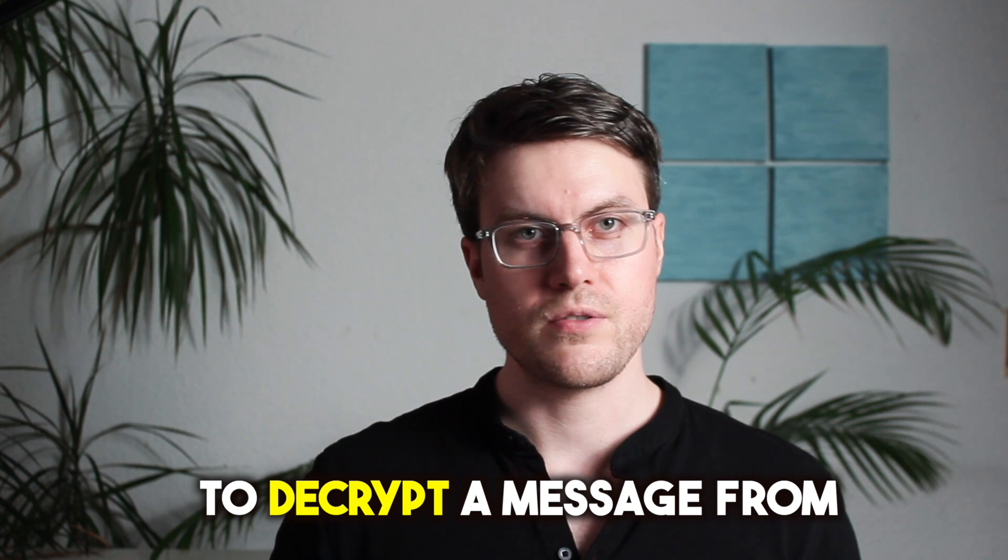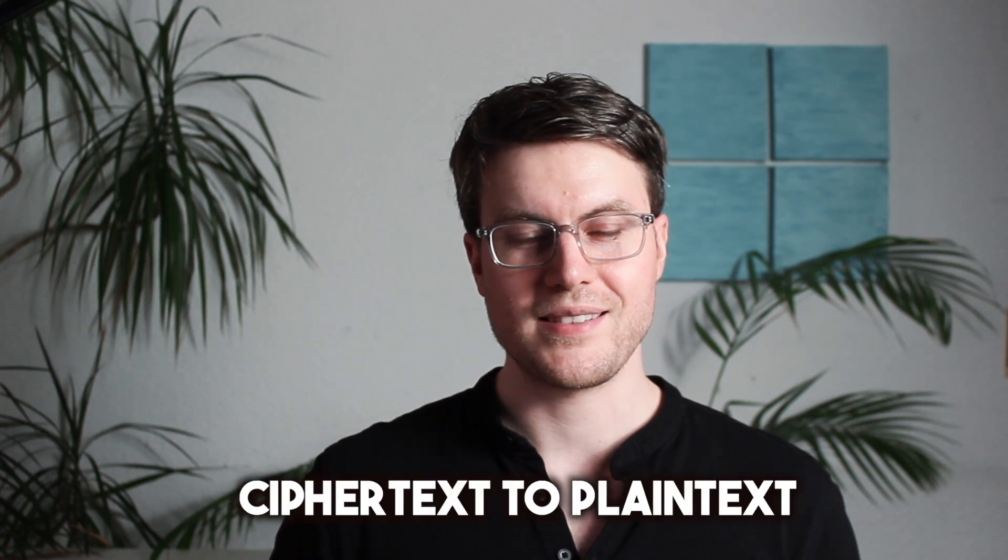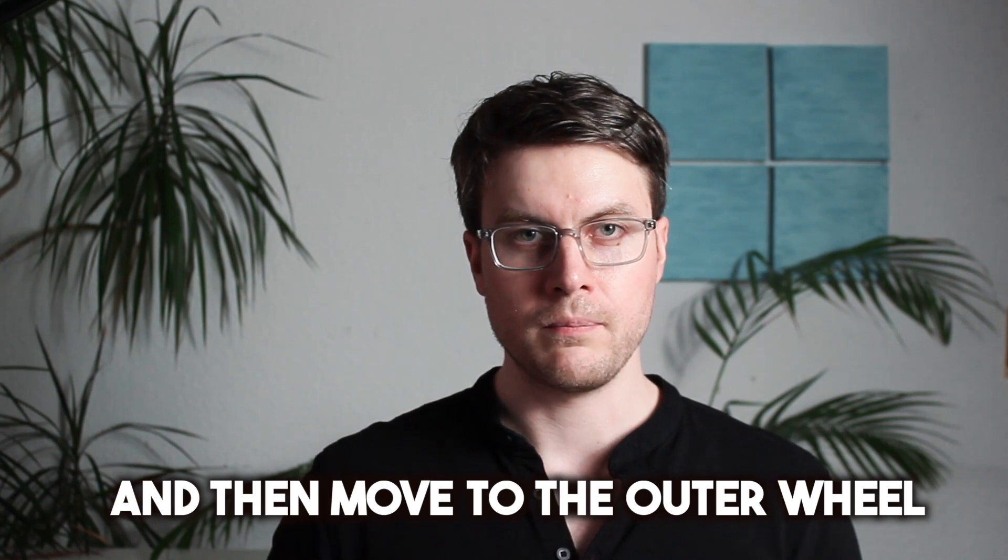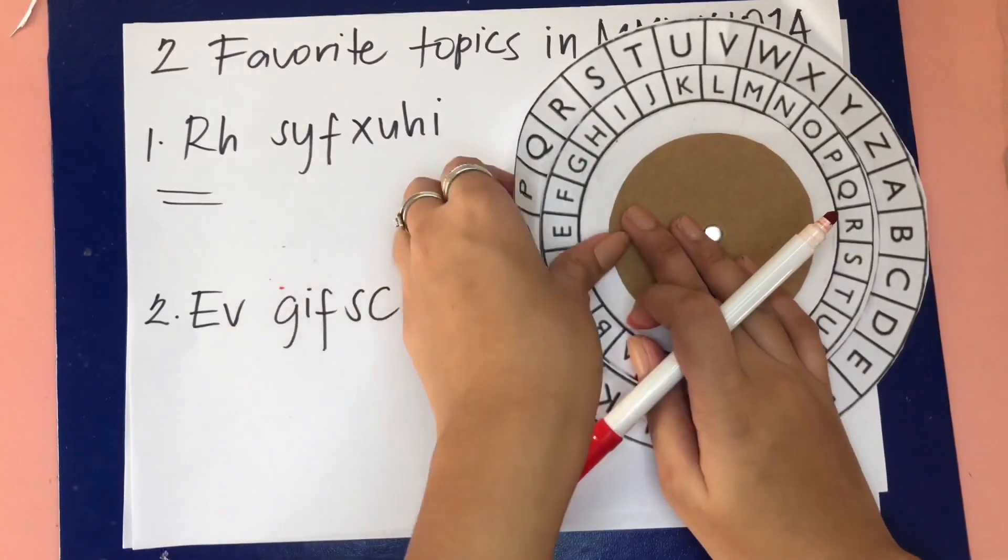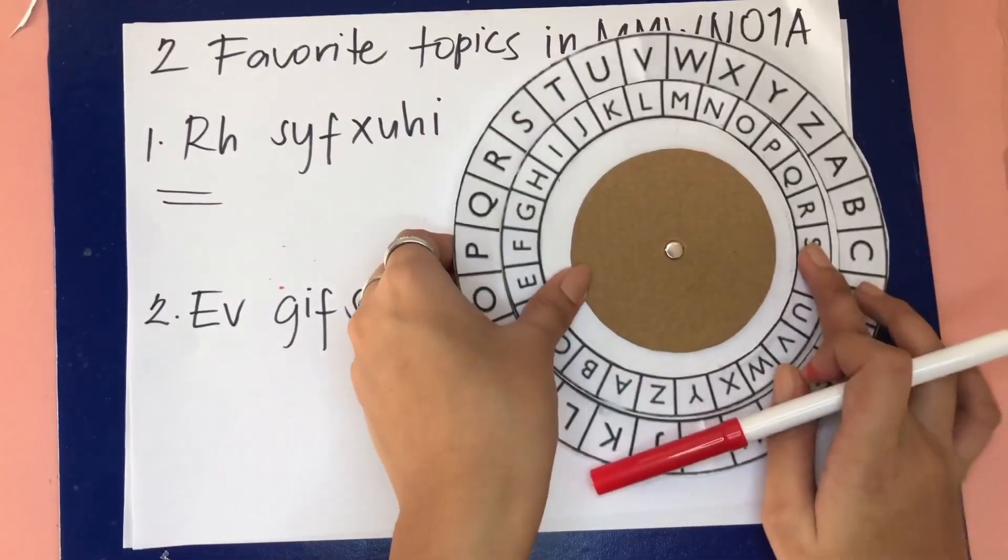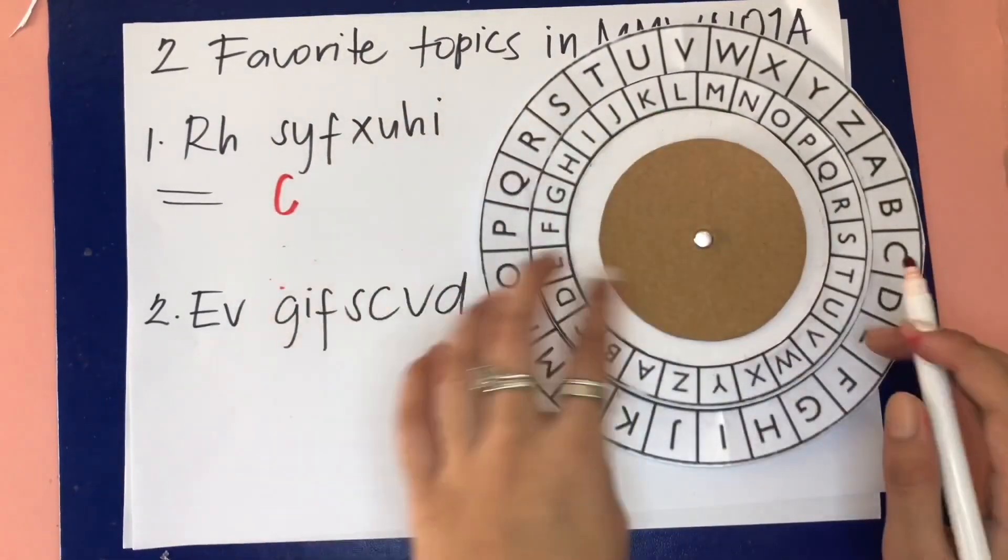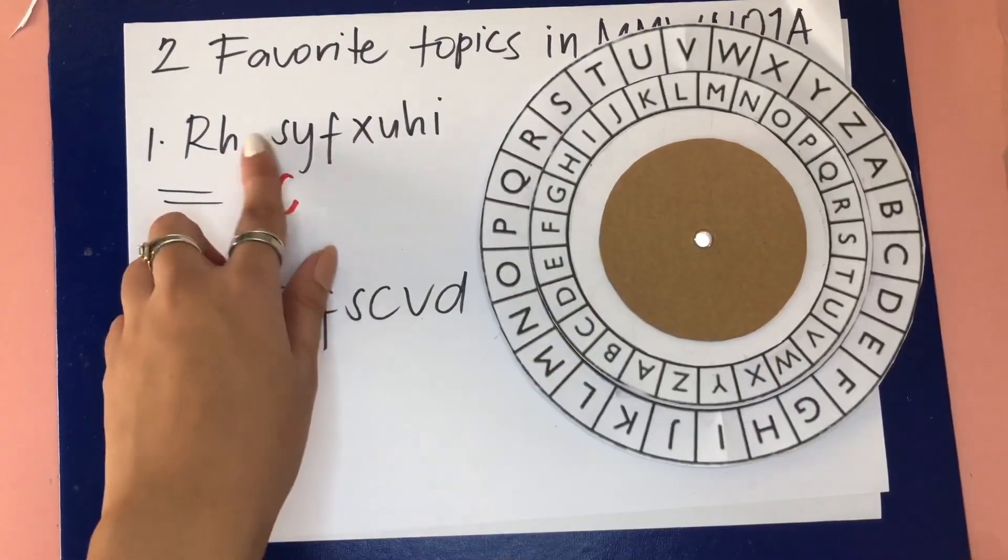Now to decrypt a message from ciphertext to plain text, we would start with the inner wheel and then move to the outer wheel. In order to do that, you need to know the key. So for example, 15, which means each letter would be offset by 15 positions. And then you can decrypt the message using the cipher wheel.